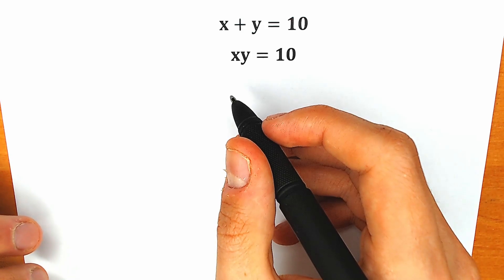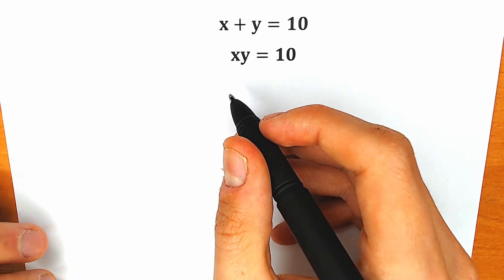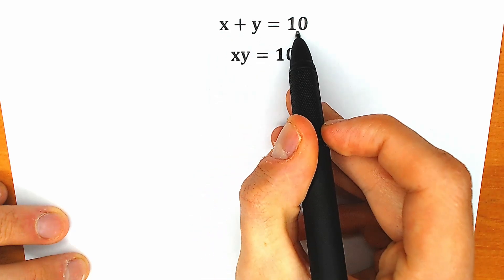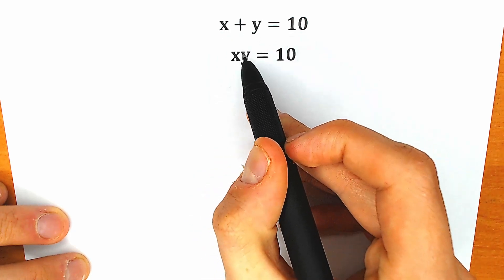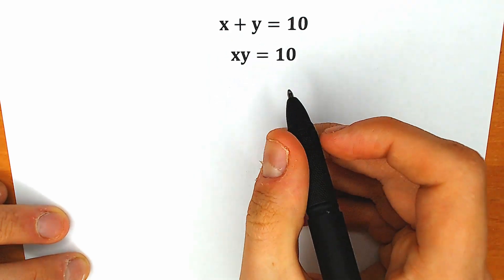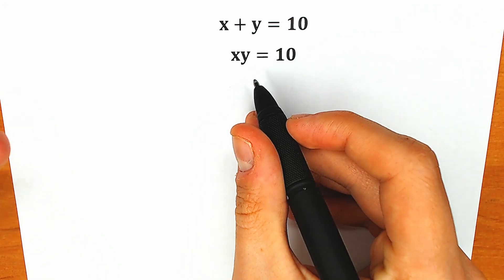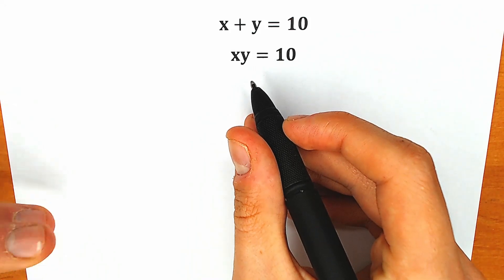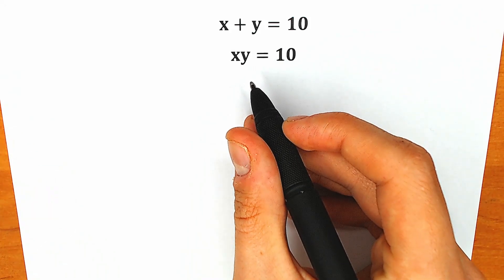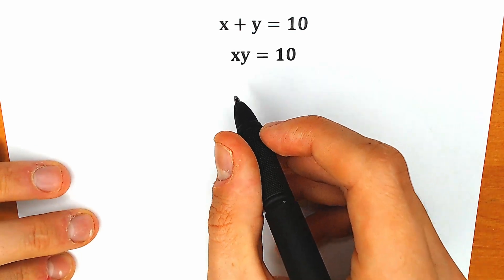Hello everyone, welcome back to my channel. I'm a Sematic. Today we have a very interesting Olympiad question. We know that x plus y equals 10, and we know that the product x times y equals 10 as well, and we need to find x and y. If you have your solution, your answer, you can write it down in the comment section, and we'll check our solution real quick in a few minutes.